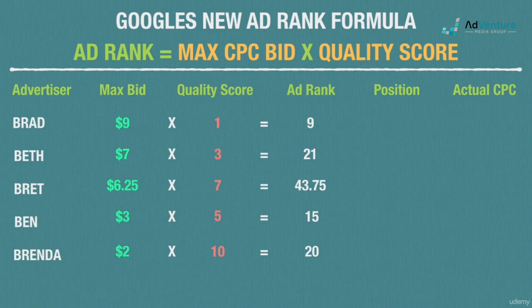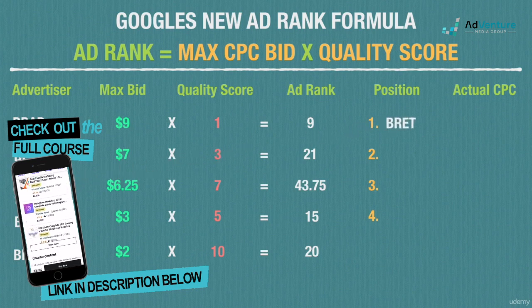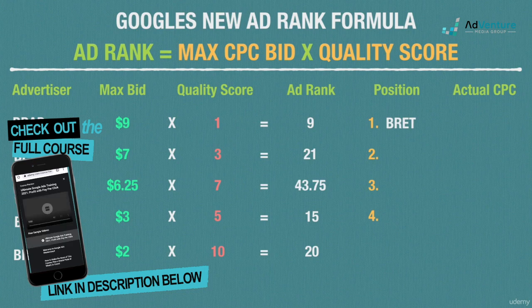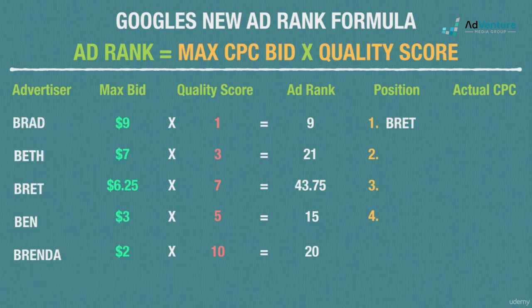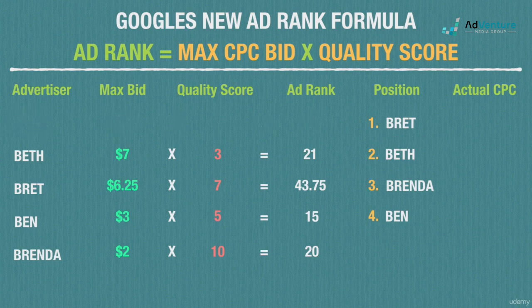With ad ranks calculated, we can determine positions. There are only four available ad slots. Brett wins the top spot even though two advertisers were willing to pay more, because his quality score of 7 gave him the highest ad rank. Beth takes second, Brenda wins third with her perfect quality score, and Ben wins fourth. Brad, willing to pay $9, gets no spot at all — his quality score of 1 gave him the worst ad rank.